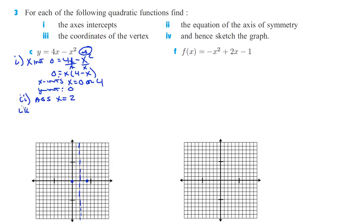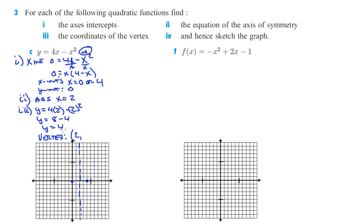To find the vertex, we plug x equals 2 into the equation: y equals 4 times 2 minus 2 squared, which gives y equals 8 minus 4, so y equals 4. The vertex is at (2, 4). We know the parabola opens downward because the squared term has a negative coefficient, so the graph opens down.